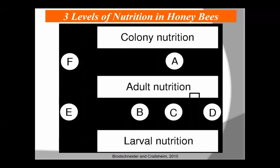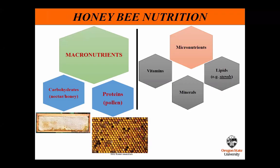We can categorize honeybee nutrition into macronutrients and micronutrients. We have a lot of understanding of macronutrients, but micronutrients are where we have a huge gap in knowledge. Macronutrients broadly break into carbohydrates and proteins. Carbohydrates — nectar and honey — are used for daily energetic needs. Pollen is the only source of protein; bees can't get protein anywhere else. On the right you see a pollen frame and a honey frame — the carbohydrate source. All pollens are not made equal; protein content ranges from about 10 to 40 percent across different pollens.